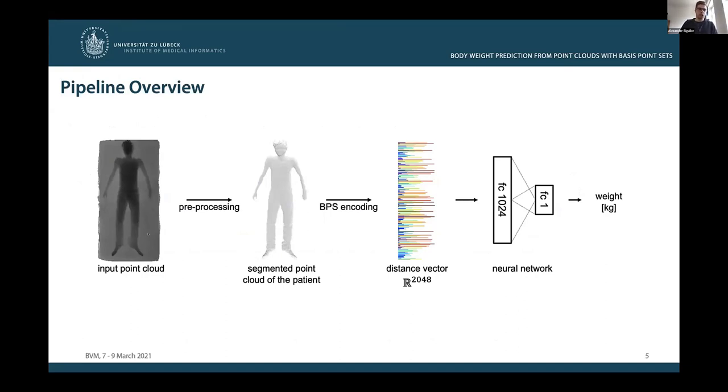In this pipeline, we initially pre-process the input point cloud in order to segment the patient from the bed. Subsequently, the segmented point cloud of the patient is encoded with help of the basis point set, and the resulting distance or feature vector is then forwarded by a one-layer fully connected neural network, which is optimized for the task of weight prediction. The core component of this pipeline is the basis point set, or short BPS, which I'll explain in more detail on the following slides.